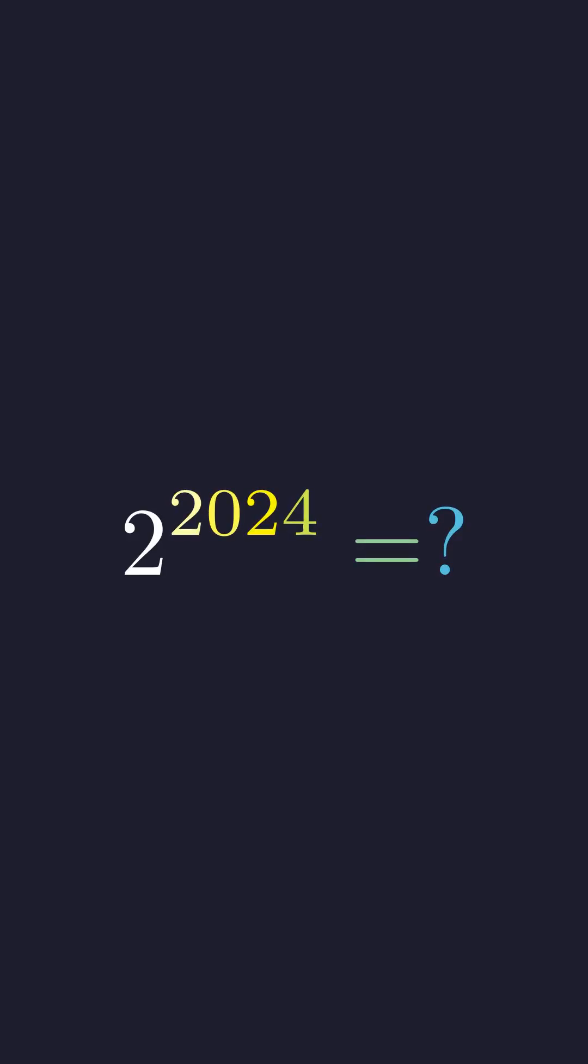Here's a question that might seem impossible at first. What's the last digit of 2 to the power of 2024? This number would have over 600 digits if we computed it directly, but there's a beautiful pattern hiding here that makes this almost trivial.